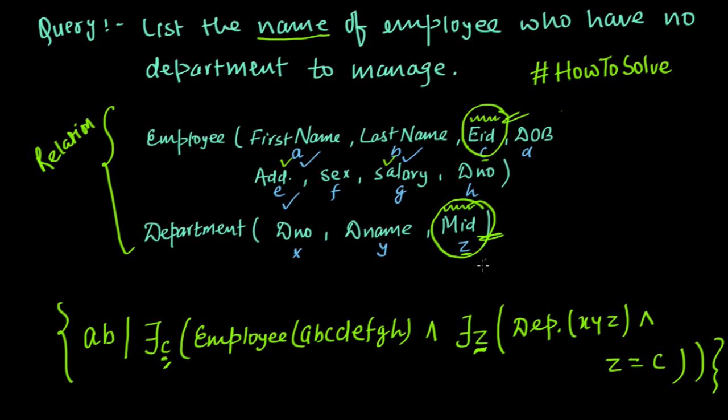So we have to write down this thing in reverse, this last expression in reverse that is there should not exist any z. So what we will do we will just add a negation sign here. So now this query will output all the employees who are not managing any department.